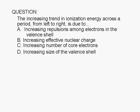The increasing trend in ionization energy across a period from left to right is due to: A. increasing repulsions among electrons in the valence shell, B. increasing effective nuclear charge, C. increasing number of core electrons, or D. increasing size of the valence shell.